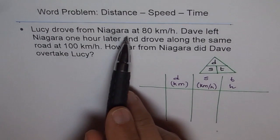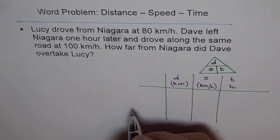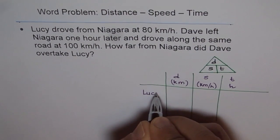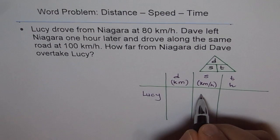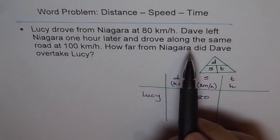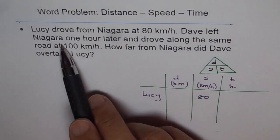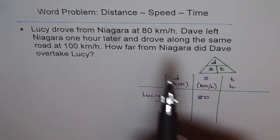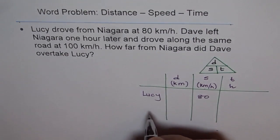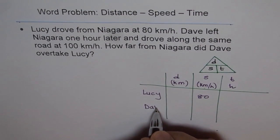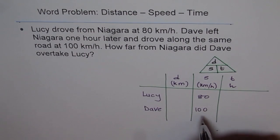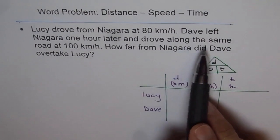Now let's read the problem to fill in the table. Lucy drove from Niagara at 80 kilometers per hour, so Lucy's speed is 80 kilometers per hour. Dave left Niagara one hour later and drove at 100 kilometers per hour, so Dave's speed is 100 kilometers per hour.